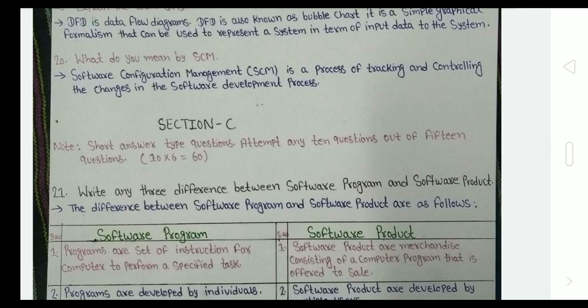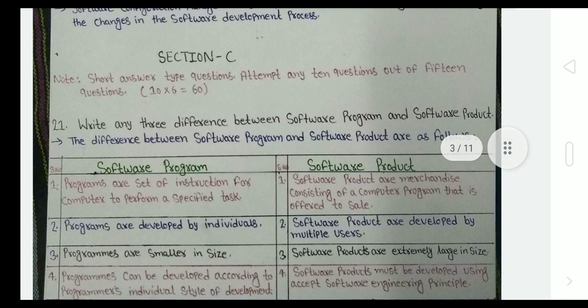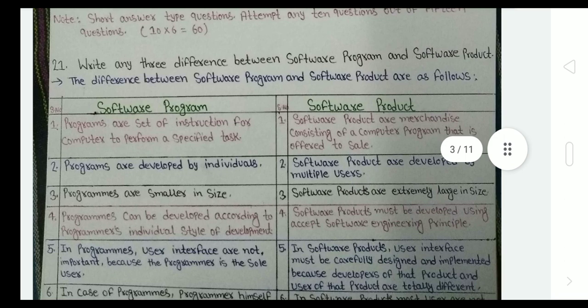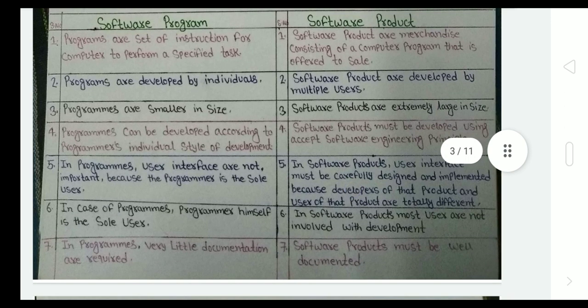So here we come to Section C. This is one of the most important questions - the difference between software program and software product. Basically this question can come for six marks, so we have to write at least six points. If we write six points between them, then six marks are confirmed. So here are the six differences, but I have written seven. Your choice - just memorize six points, the difference between software program and software product. I am telling you this is an important question.